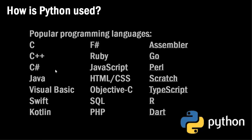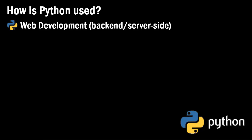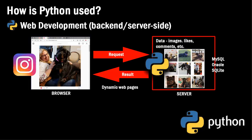So what are the uses for Python? How is Python primarily used? Well, one of the popular uses of Python is in web development. We have what's often referred to as full-stack development, which consists of developing the front-end in the browser, and that's usually done with HTML, CSS, and JavaScript.